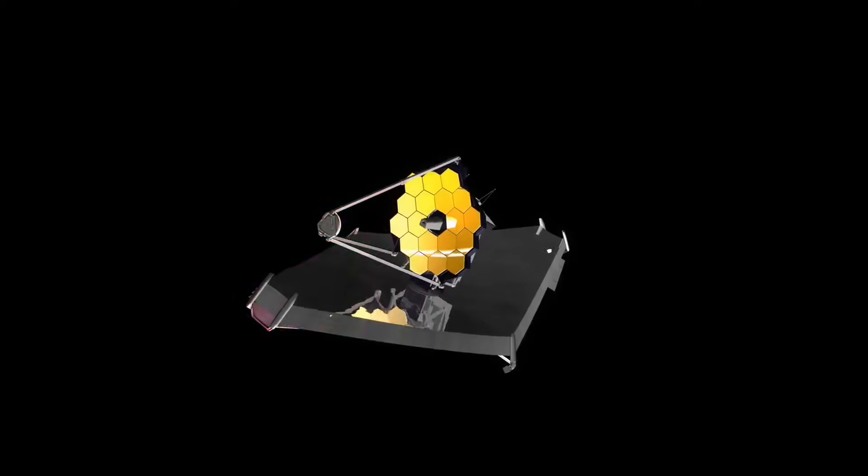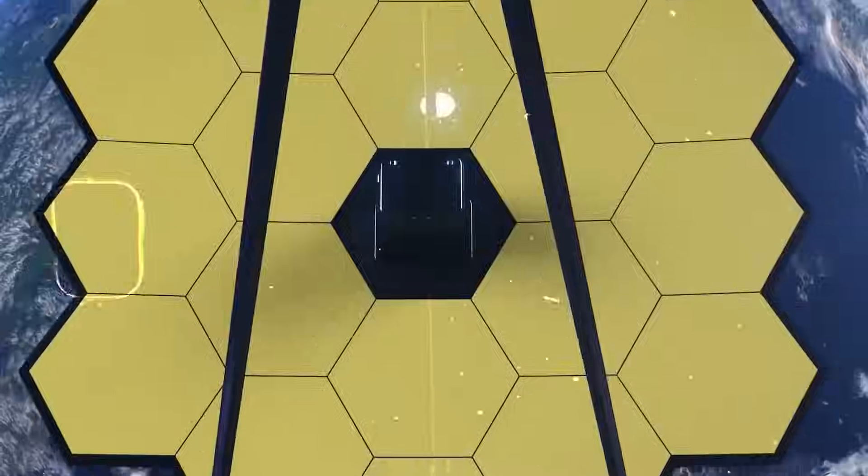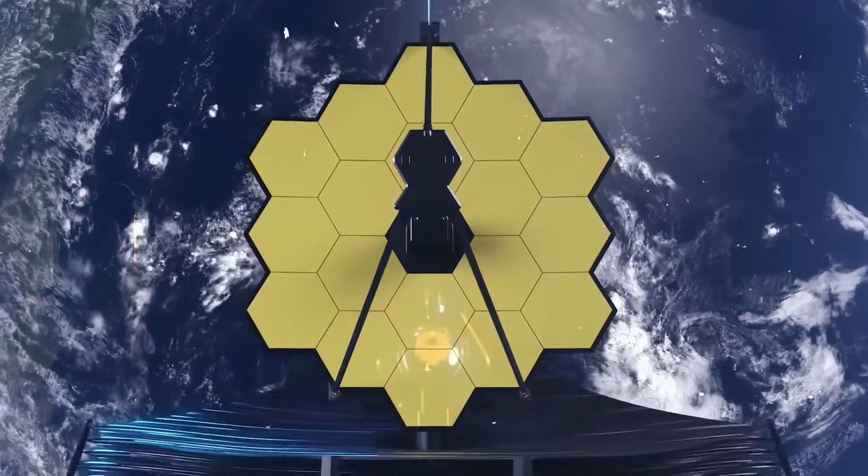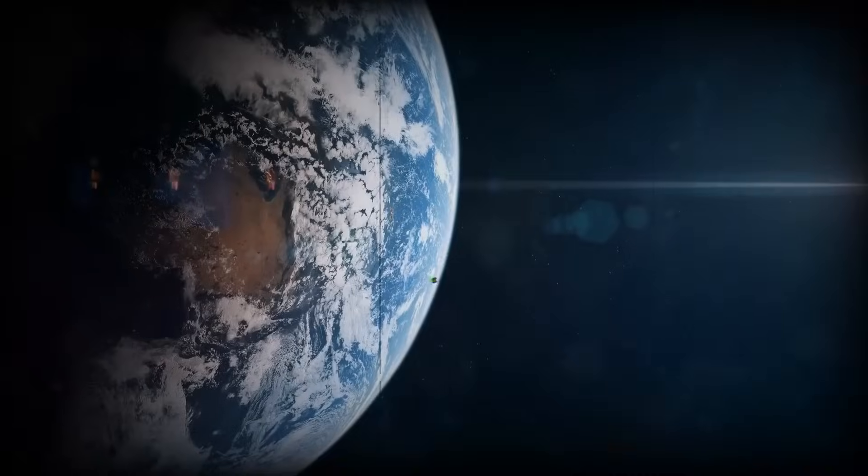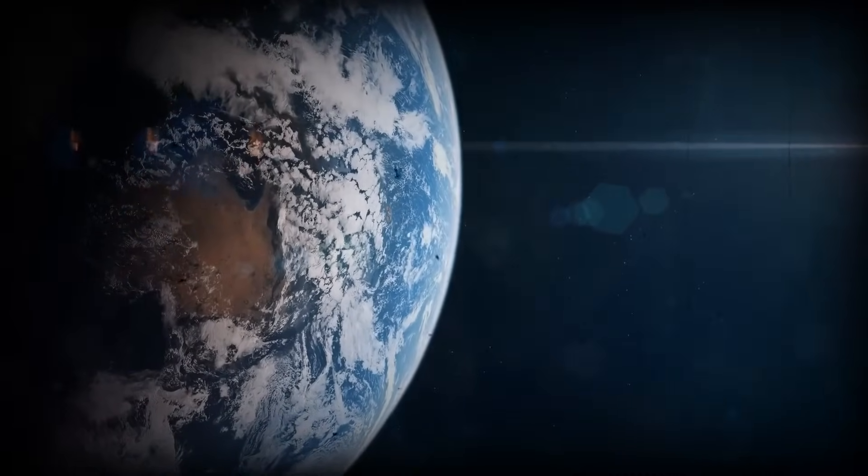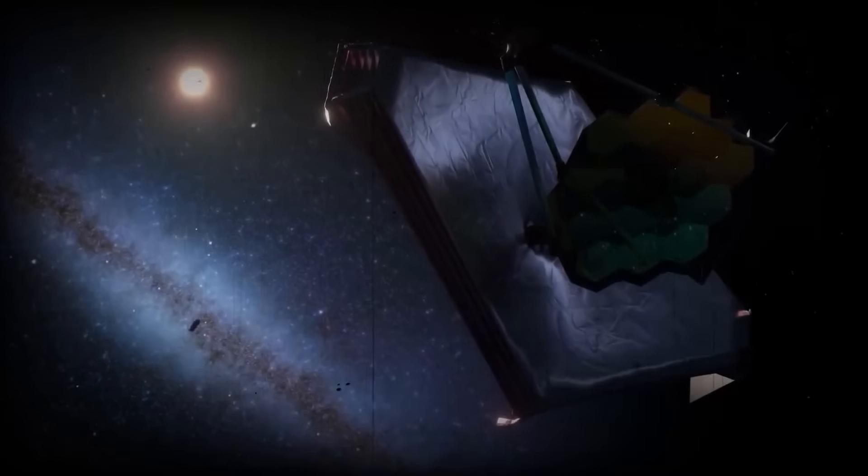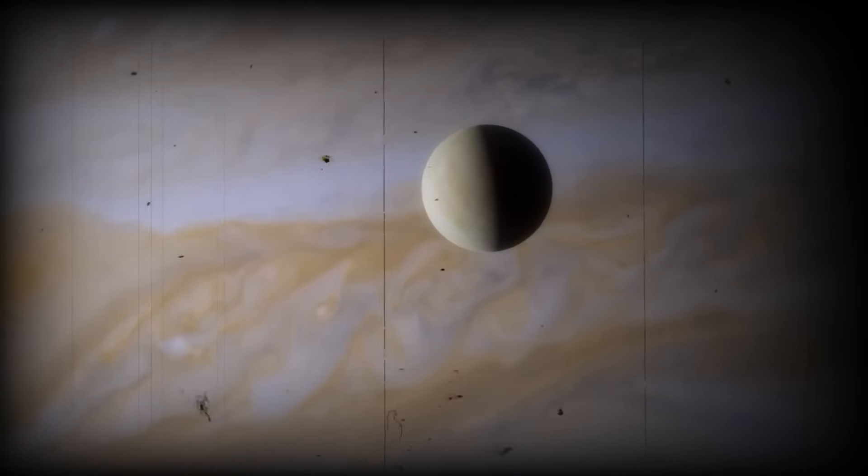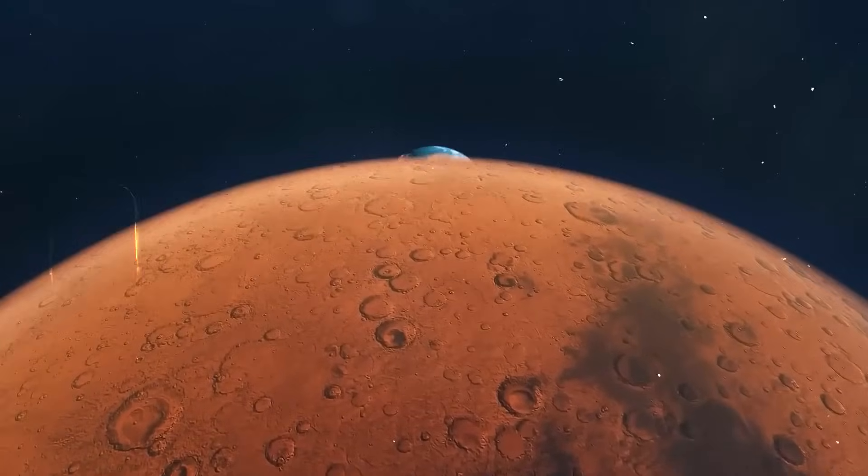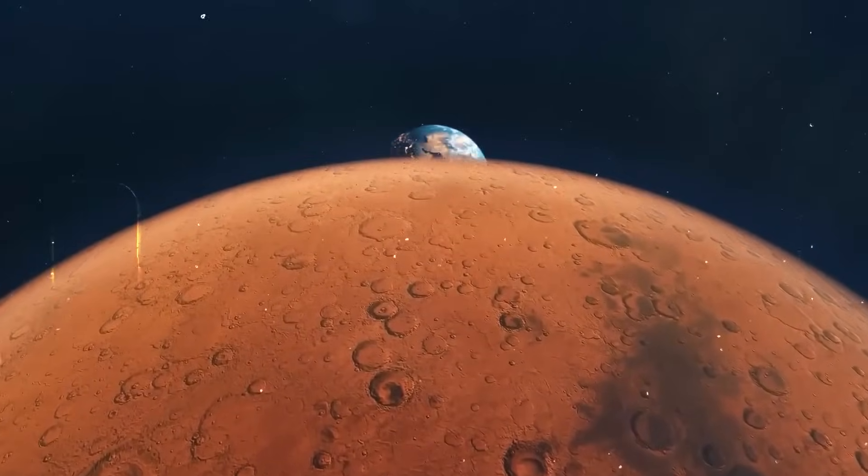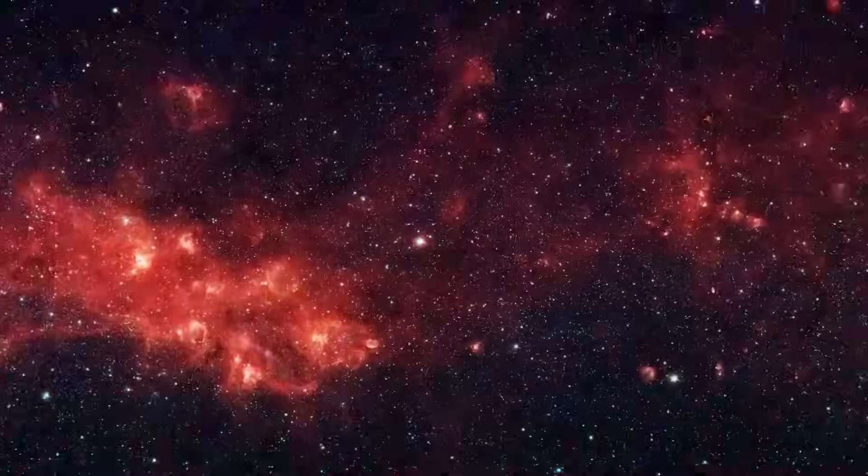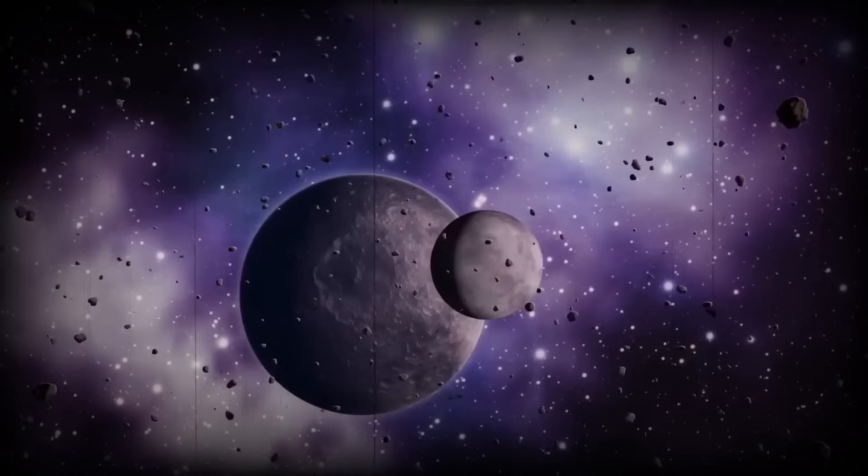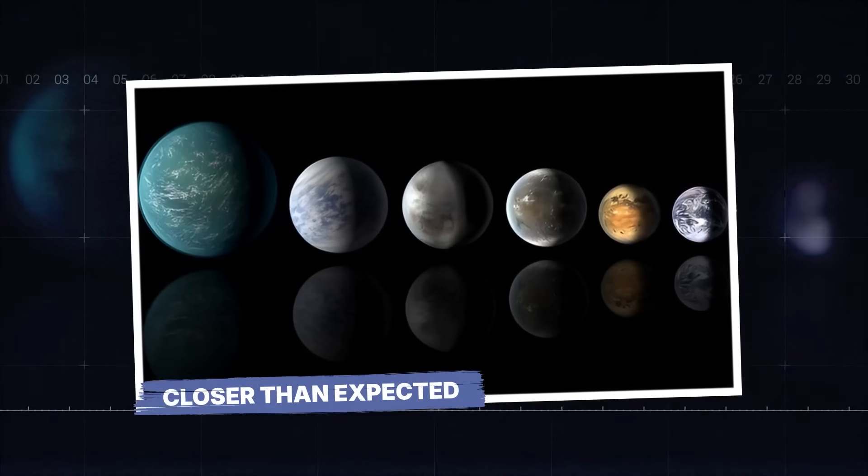Think of the James Webb Space Telescope as not just a telescope but a time machine and a life hunter rolled into one. It's looking back in time billions of years while also scanning for signs of present-day life beyond Earth. The discoveries it's making are not only changing our view of specific planets but redefining what it even means for a world to be habitable. Thanks to Webb, the search for a second Earth is no longer just a dream—it's an active investigation, with new suspects emerging every month.